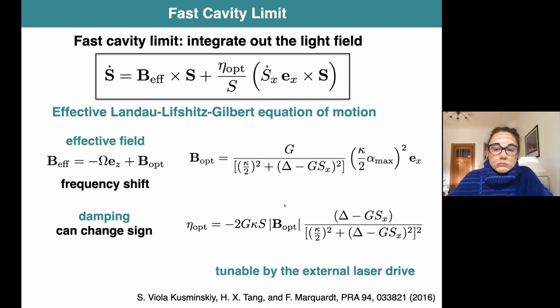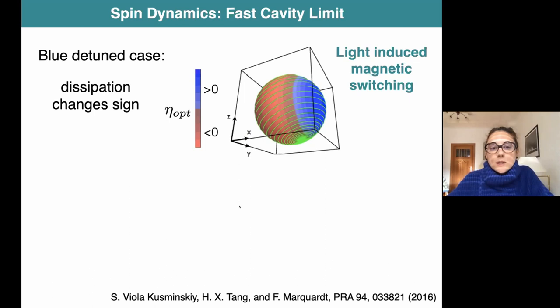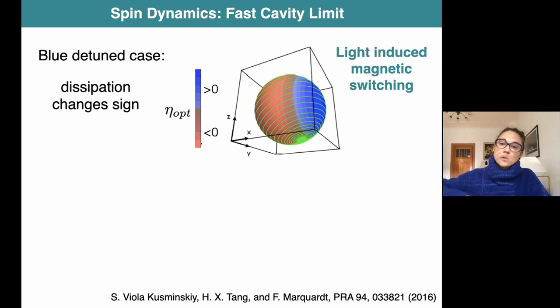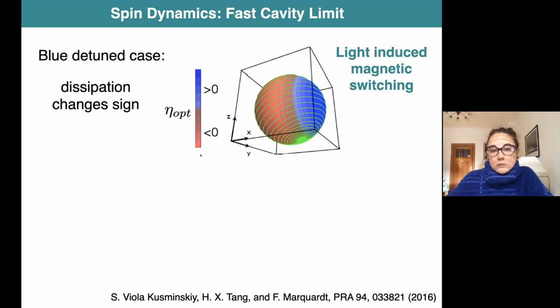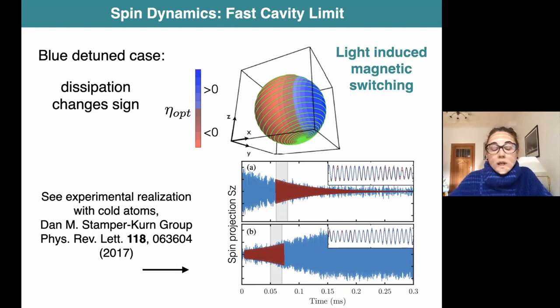If we look at the blue-detuned case, we are pumping energy into the system and the optically induced dissipation can change sign - it can be negative. One of the consequences is light-induced magnetic switching where the original equilibrium position of the magnetization is inverted - a kind of population inversion. This is probably hard to realize in a solid-state system, but the same kind of magnetic switching has been realized in cold atoms in the group of Stamper-Kurn, where exactly the same Hamiltonian is present.